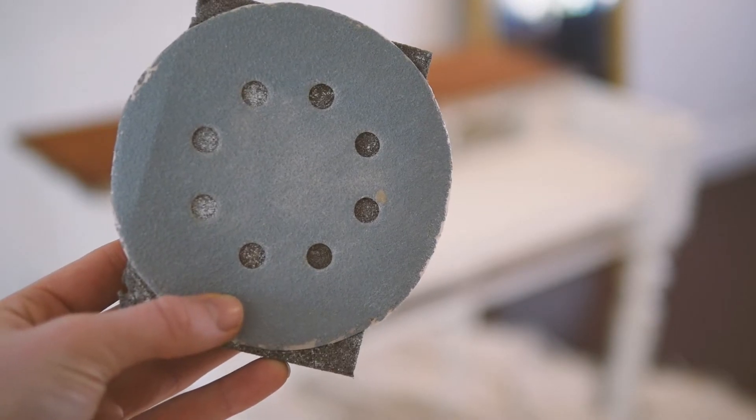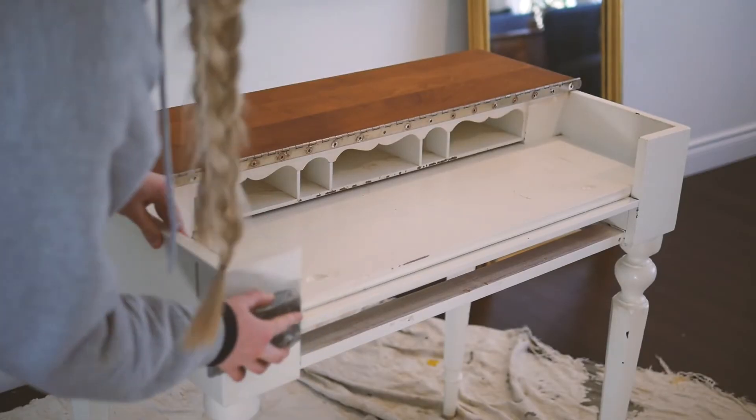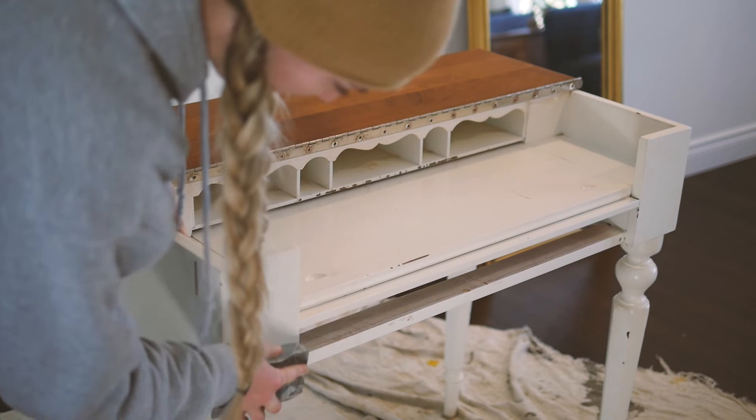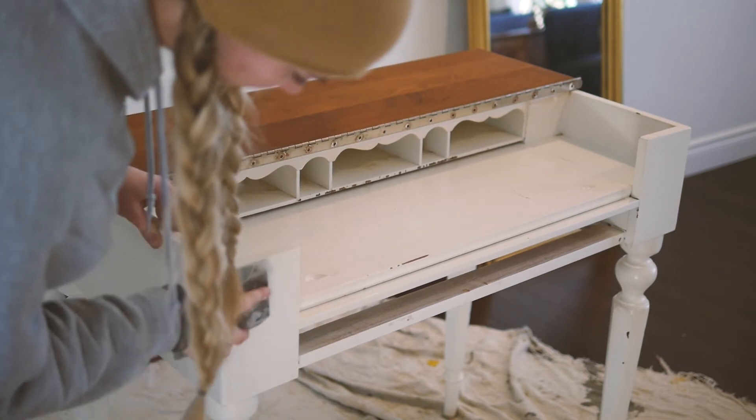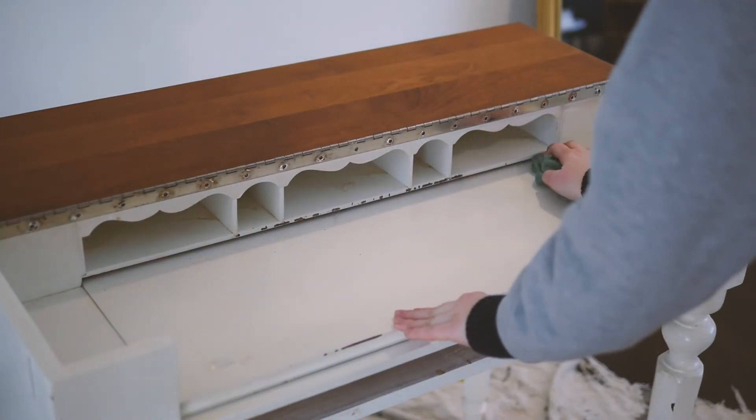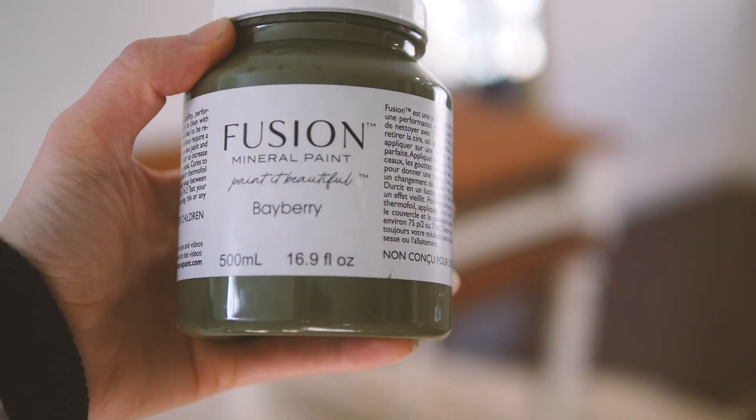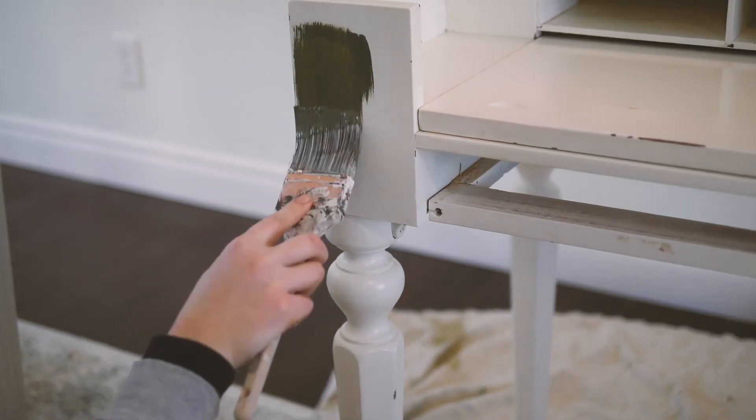Next I have to scuff sand everything down. I'm going to do that using an 80 grit sanding disc on top of a sanding block. Then I'm going to take a damp rag and make sure it's all clean and ready for painting. I'm painting with Bayberry Infusion mineral paint.